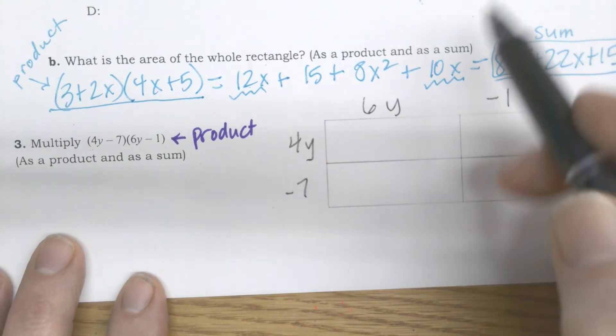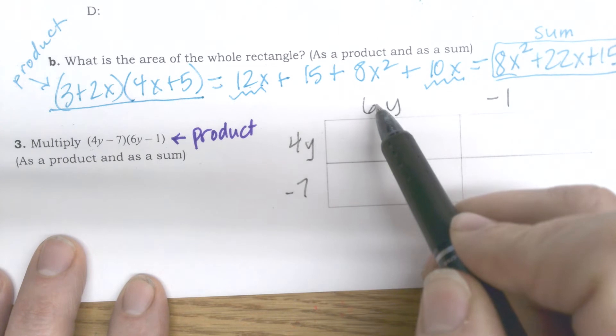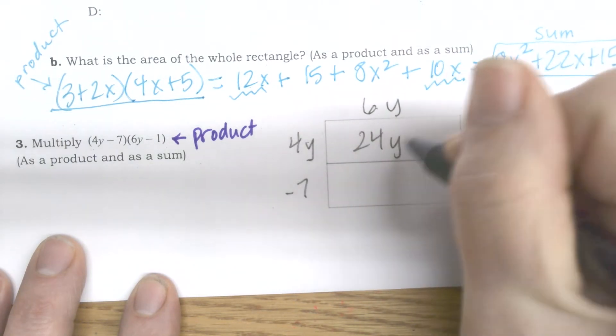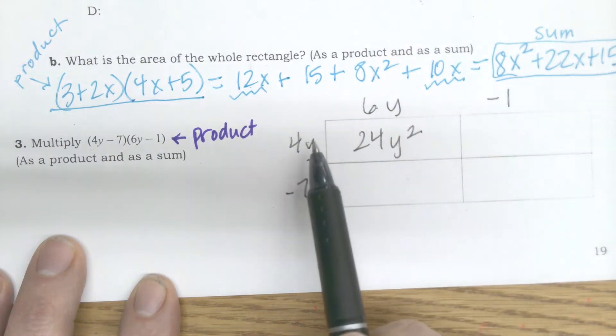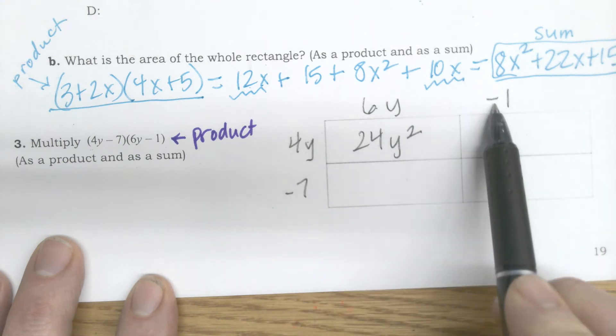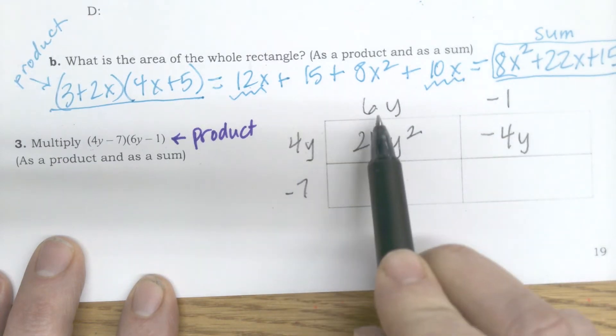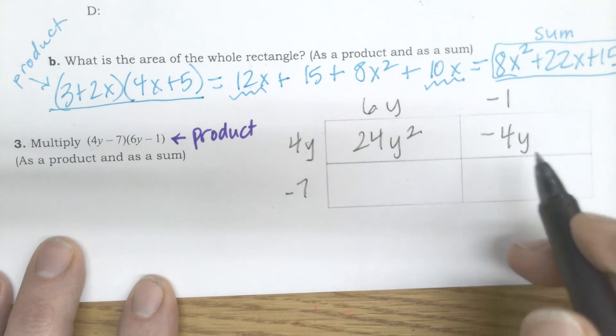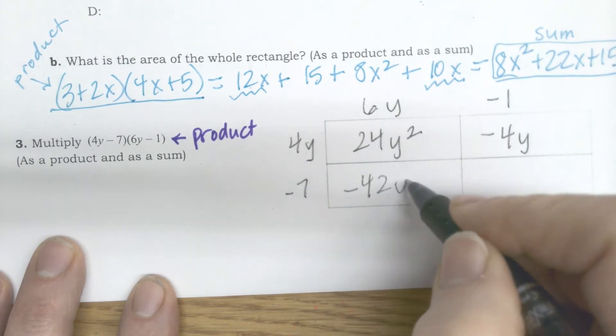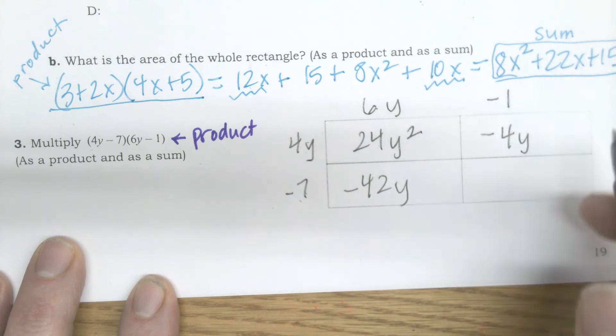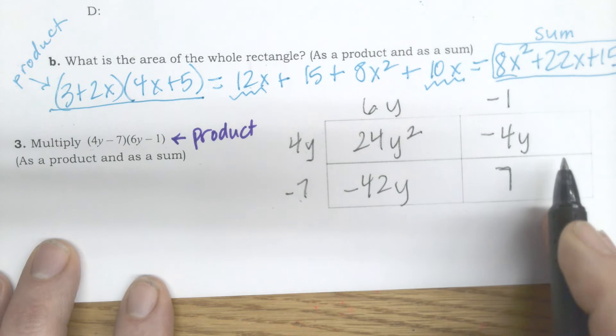So now I do 4y times 6y, which is 24y squared. Don't forget the powers on those. 4y times negative 1 is negative 4y. Negative 7 times 6y is negative 42y. Negative 7 times negative 1 is positive 7.